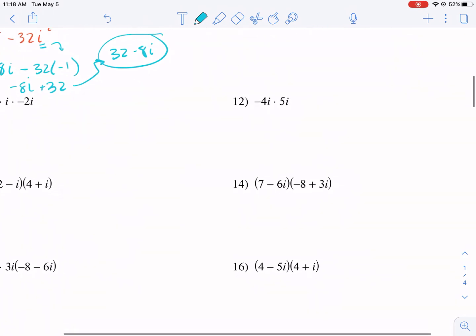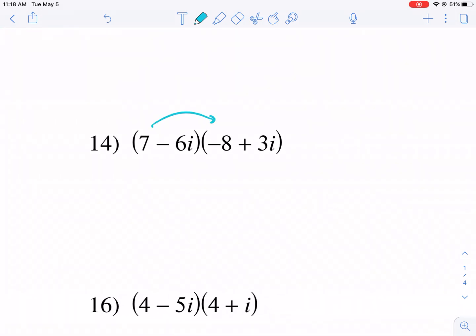Let's do one with multiplication of binomials. So we have two complex numbers being multiplied together. We're just going to FOIL here. You don't necessarily have to do first, outside, inside, last. You can do last,